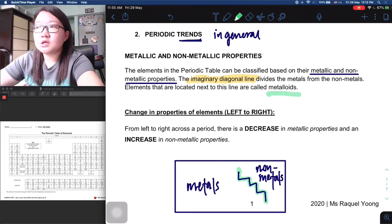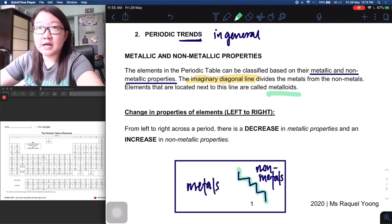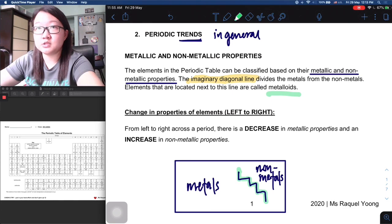You will realize that certain elements will be lying next to this line, sitting on the staircase. These elements also have a special name - they are called metalloids. These elements, because they are sitting on the line, in terms of properties they share both metallic as well as non-metallic properties.